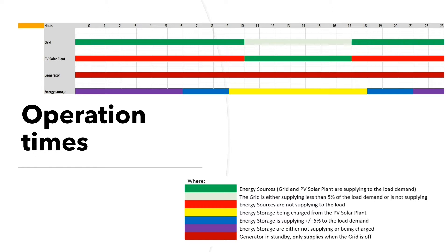Here are the operation hours of our system. Grid energy sources: grid and PV are supplying to the load demand when shown in green. The grid supplies from midnight to 10 o'clock, then from 10 to 17 the solar supplies and the grid only supplies around 5% to compensate. The PV solar system does not supply from 0 to 10, and from 10 to 5 the PV solar system is supplying. Red means it's not supplying. The generator is the last backup source and only supplies when necessary.